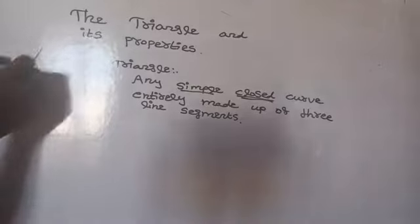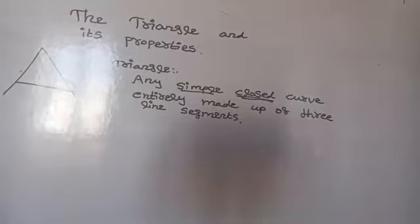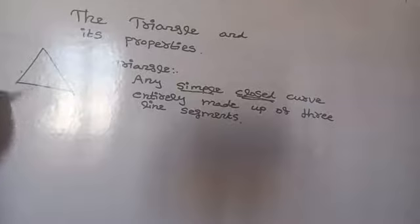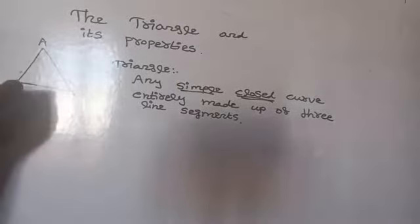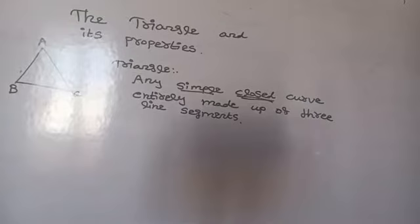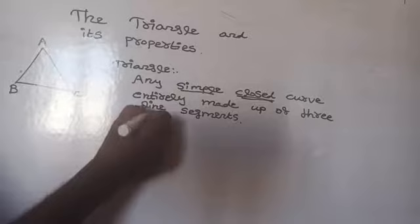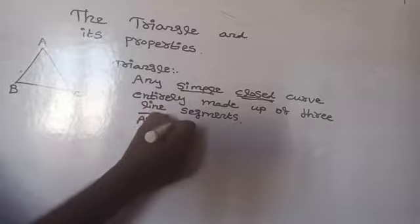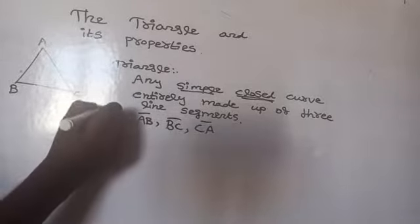Consider triangle ABC. It has 3 vertices, 3 sides, and 3 angles. The three sides are AB, BC, and CA.